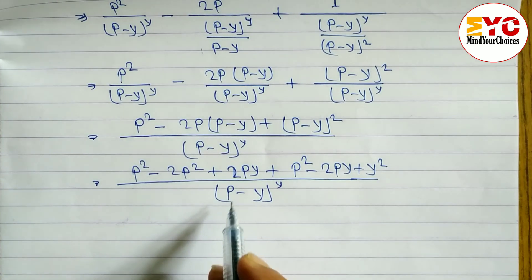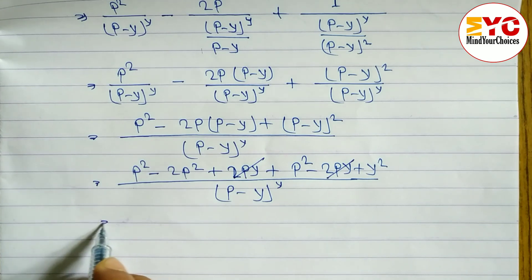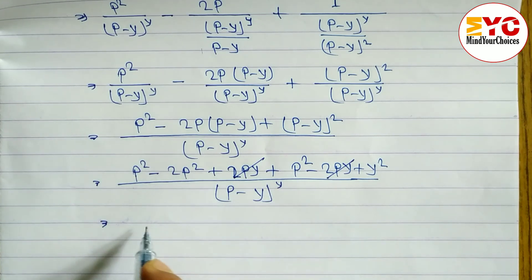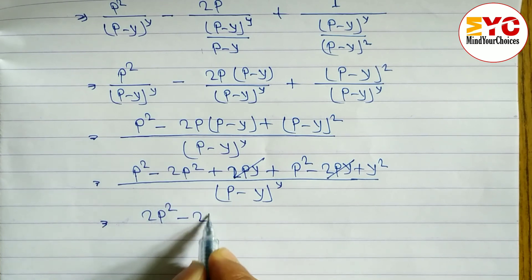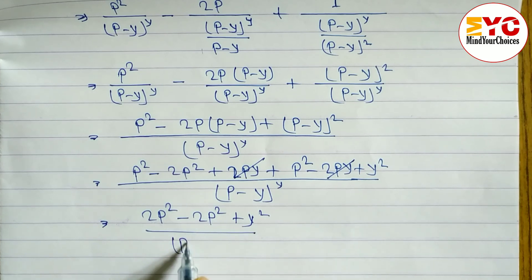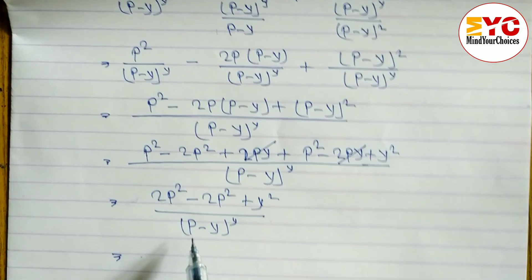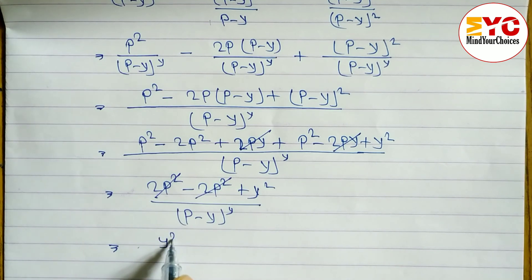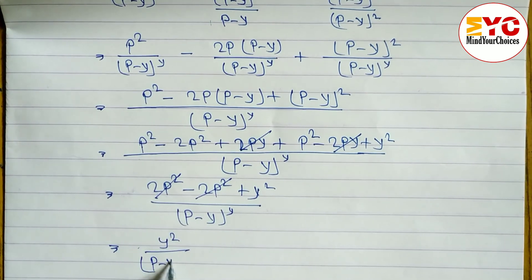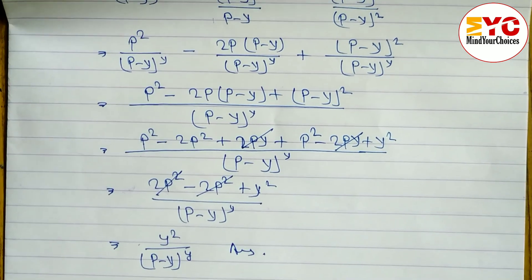Now we reduce: 2py and −2py cancel. Then p² and −2p² and +p² — the 2p² terms cancel. The remaining answer is y² / (p−y)^y. Hope you understand up to here.